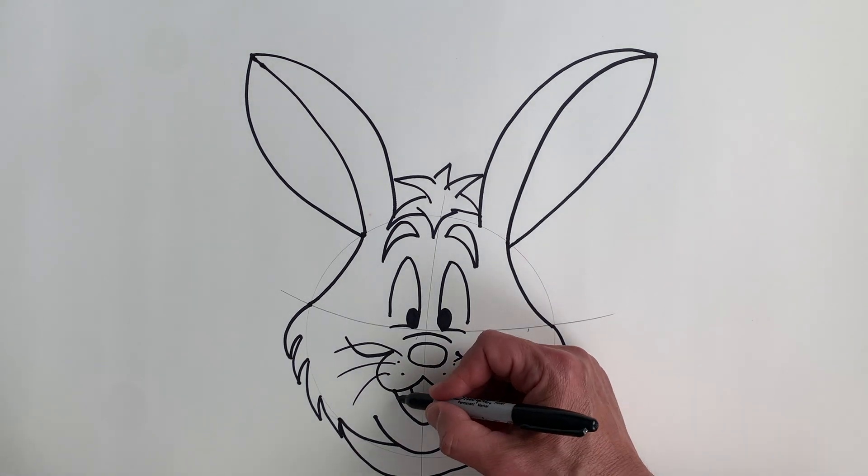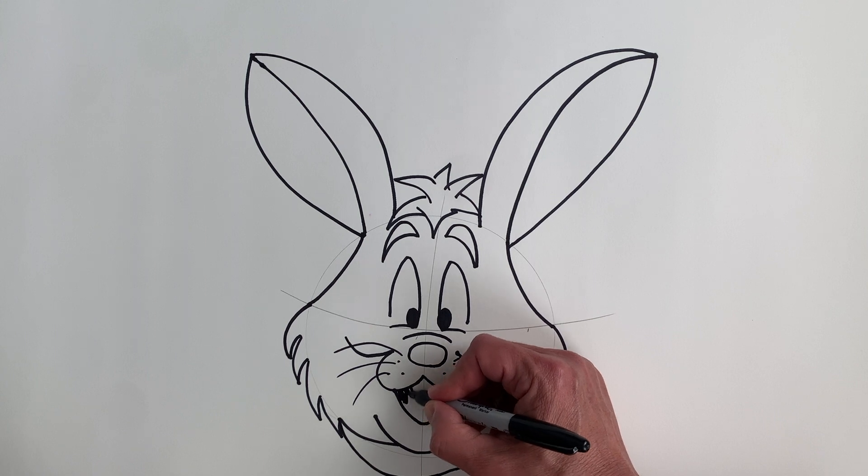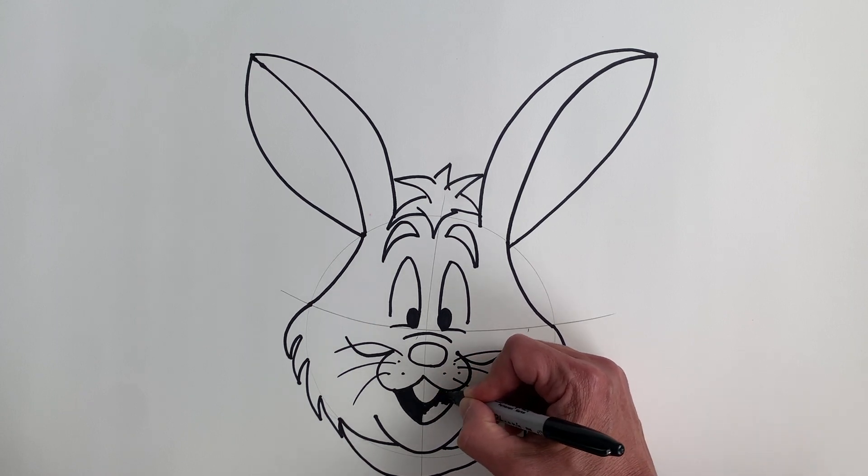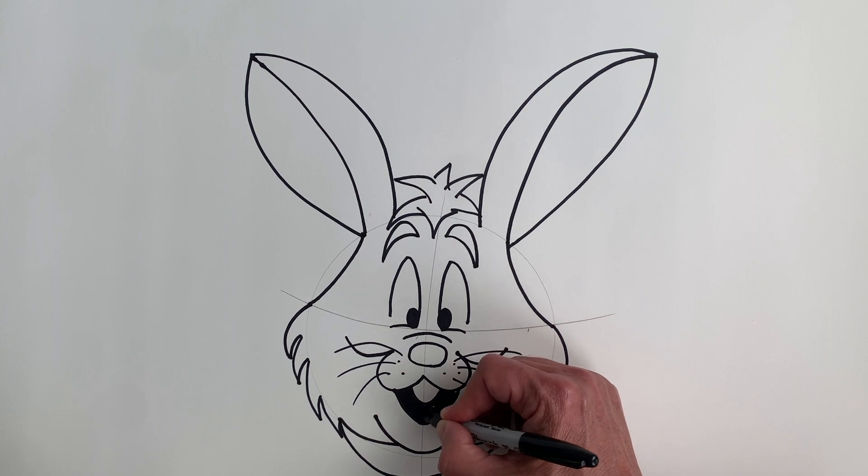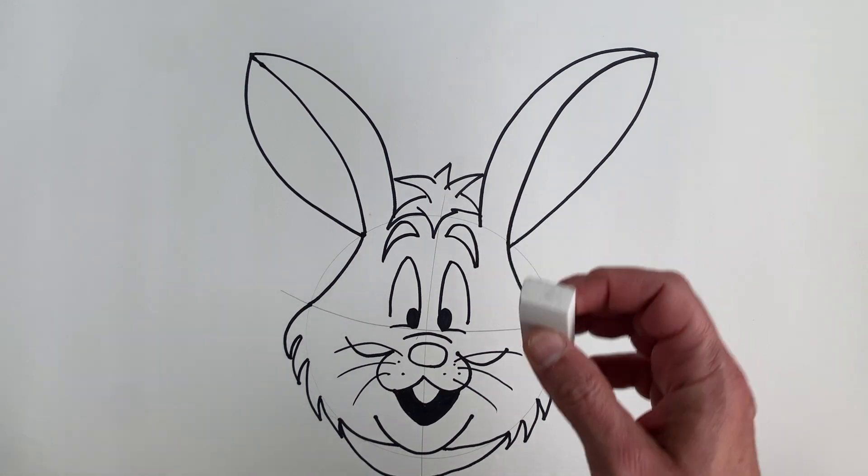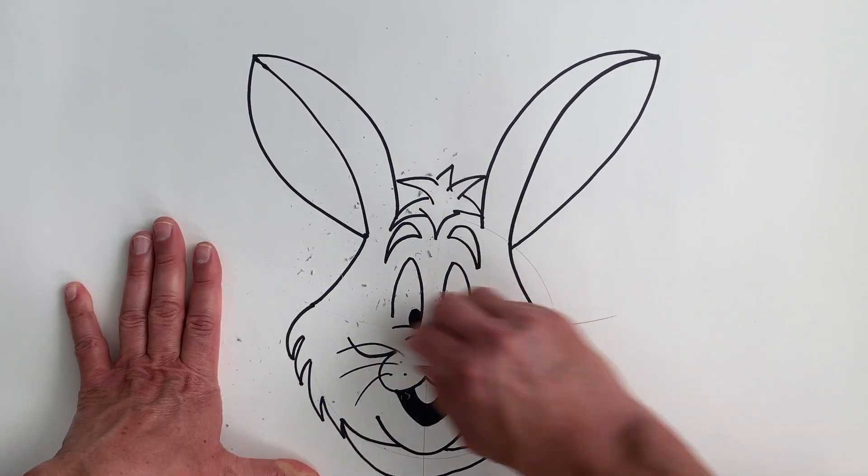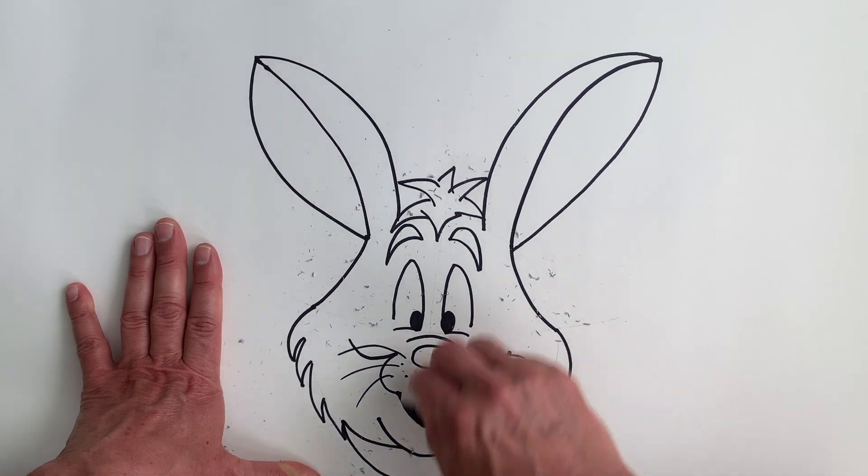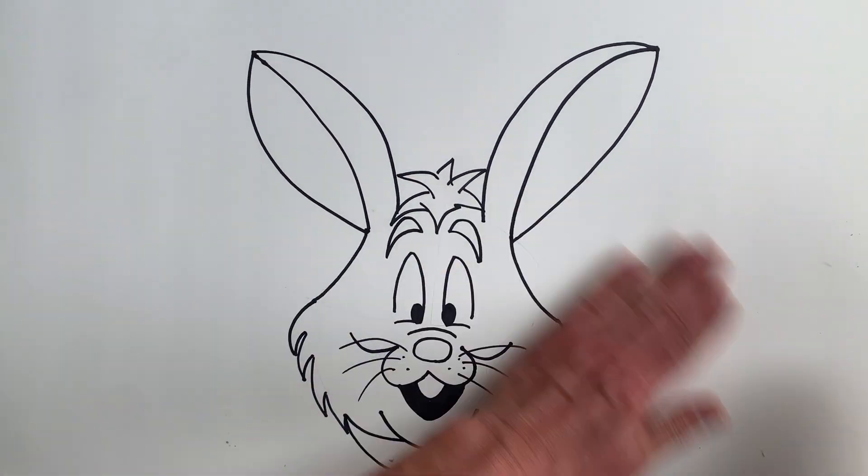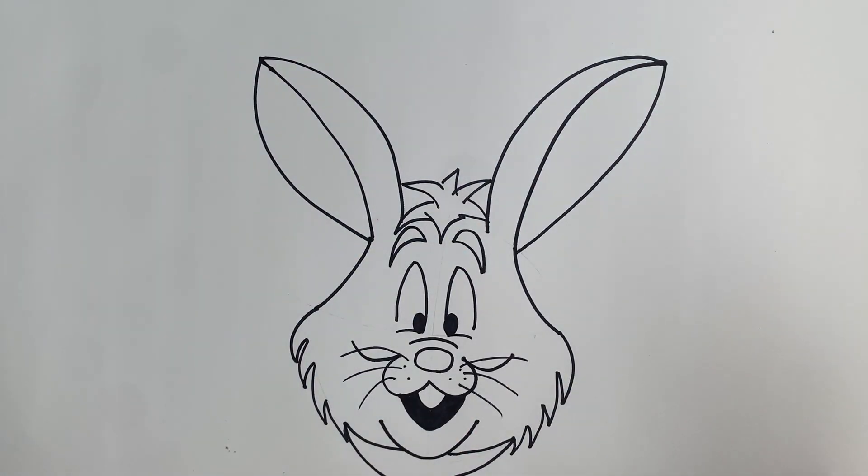Yep, we forgot to do something. I forgot to darken our mouth. Go ahead and do that now. Because the next step will be to erase our pencil lines. Grab your eraser. And let's erase those pencils.